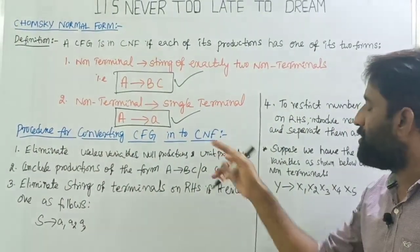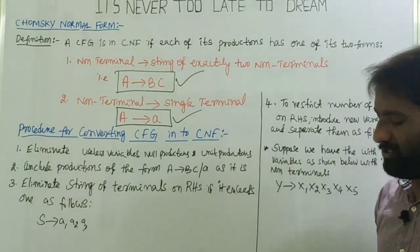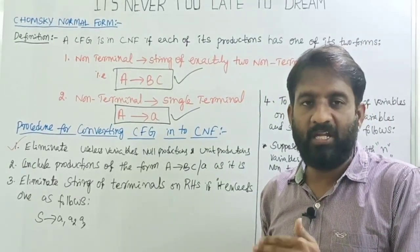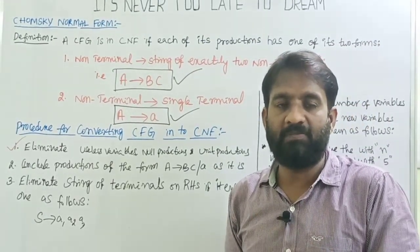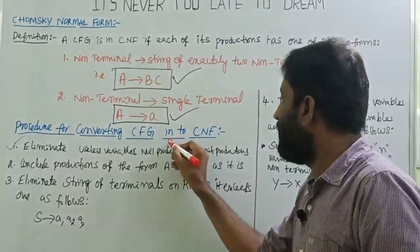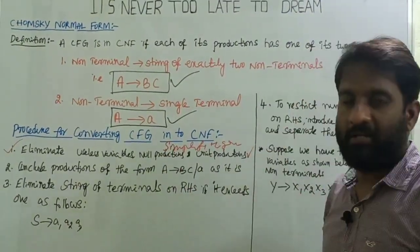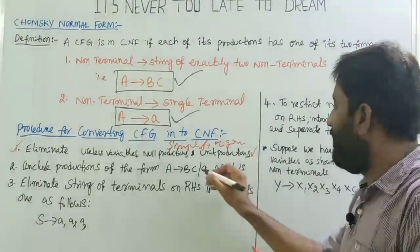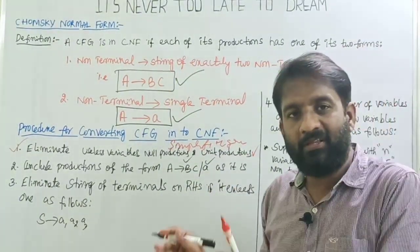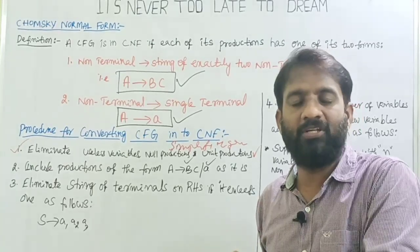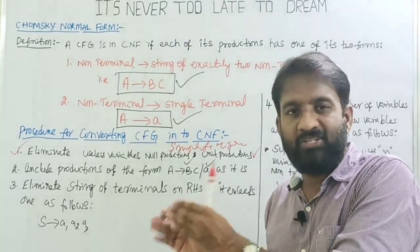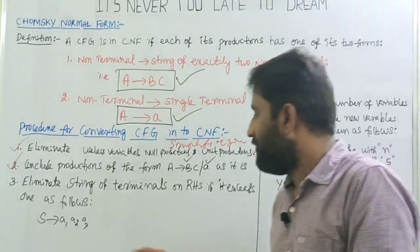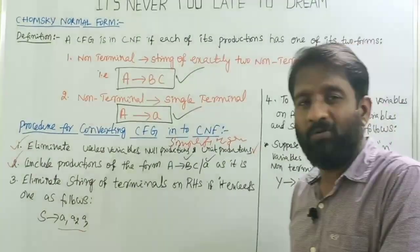Let me write down the procedure to convert a context-free grammar into Chomsky Normal Form. The first step is: from the given context-free grammar, eliminate useless variables, eliminate unit productions, and eliminate epsilon productions — meaning simplify the grammar. The second step is: if productions in the given grammar are already in the form A → BC or A → a (a single terminal), they are already in Chomsky Normal Form and you do not need to convert them; include them as they are.